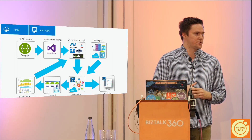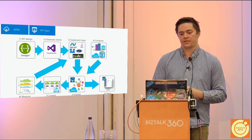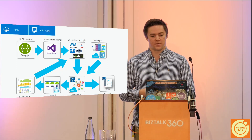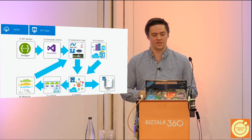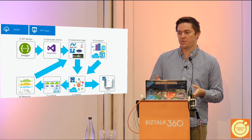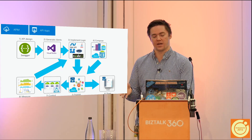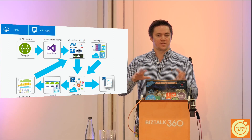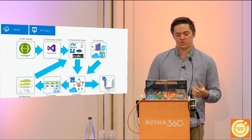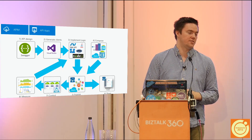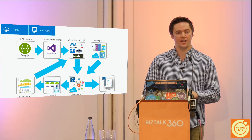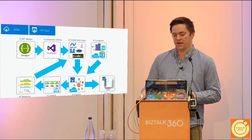You can use Visual Studio for your API design and implement your logic in any language — we have Java, PHP, and Node support. Then you publish that out to an API app and use API management to handle reactive versioning, control, measure, and monitor those APIs as they're being used. You can track when old versions of your APIs have gone away and deprecate them.